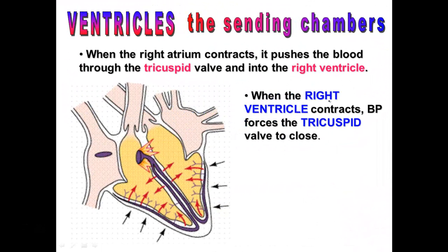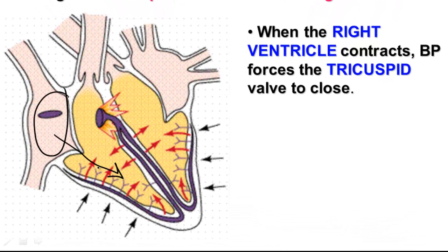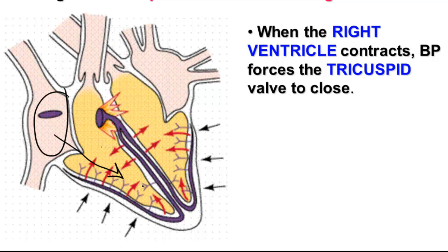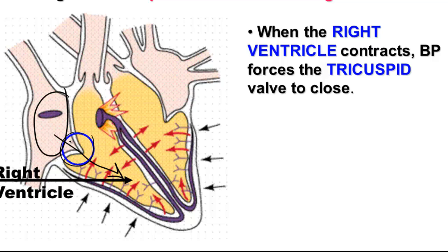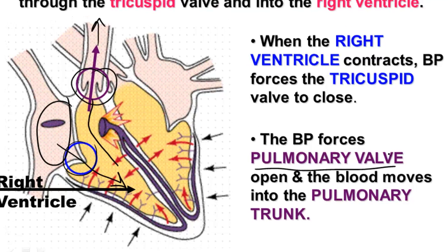Ventricles are called the sending chambers because they send the blood either to the lungs or to the body. When the right atrium contracts, it pushes blood through the tricuspid valve and into the right ventricle. When the ventricle contracts, that tricuspid valve is slammed shut. At the same time, the pulmonary valve opens, and blood gets sent towards the lungs through the pulmonary trunk, which is a T-shaped blood vessel.